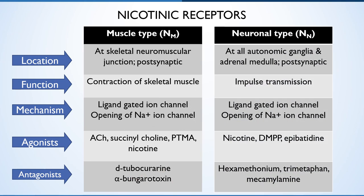The neuronal type (N-N) receptors are located at all autonomic ganglia and the adrenal medulla. They carry impulse generation and transmission through autonomic ganglia, firing of postganglionic neurons, and secretion of norepinephrine and epinephrine from the adrenal medulla. This receptor is also from the ligand-gated ion channel family. Specific agonists are nicotine, DMPP (dimethylphenylpiperazin), and epibatidine; antagonists are hexamethonium, trimethaphan, and mecamylamine.